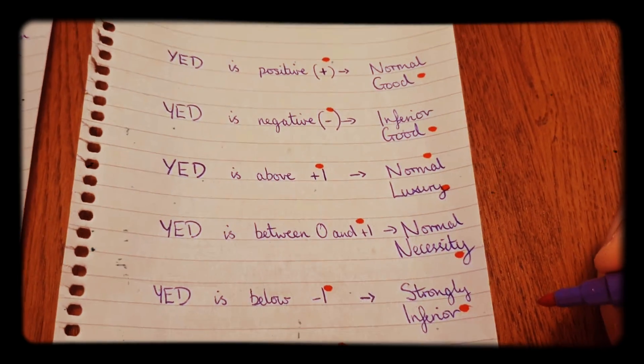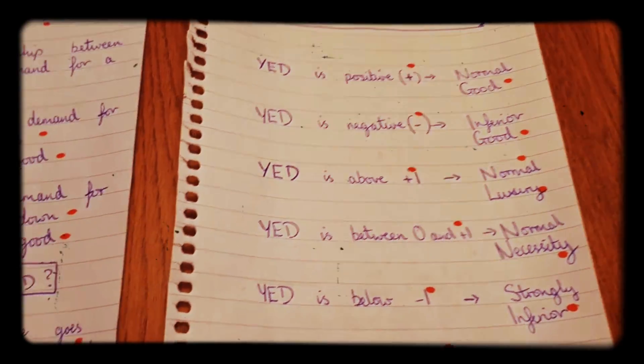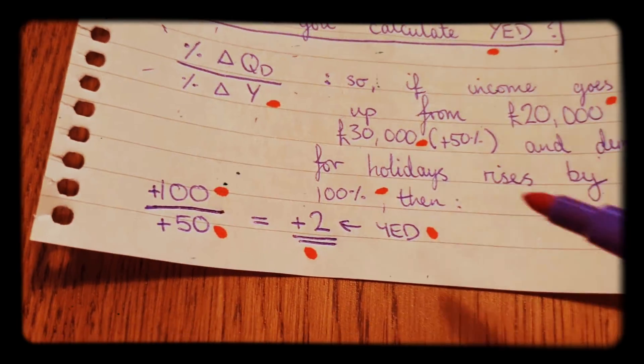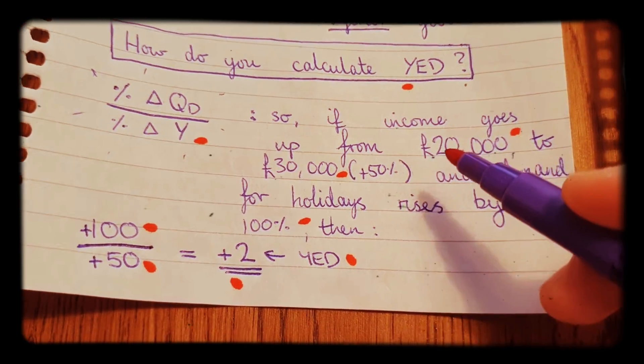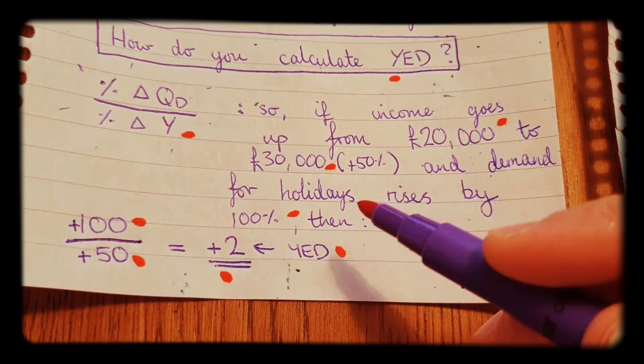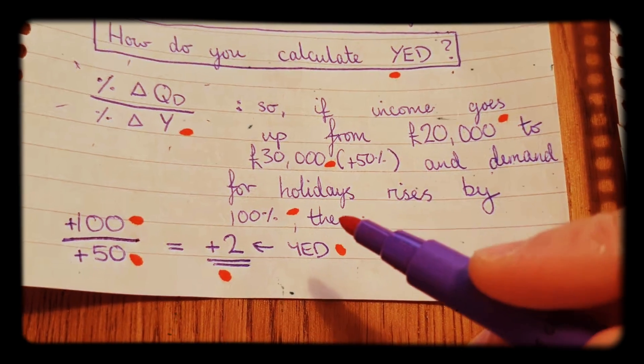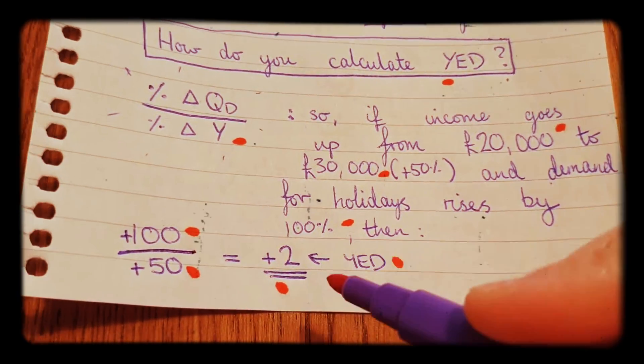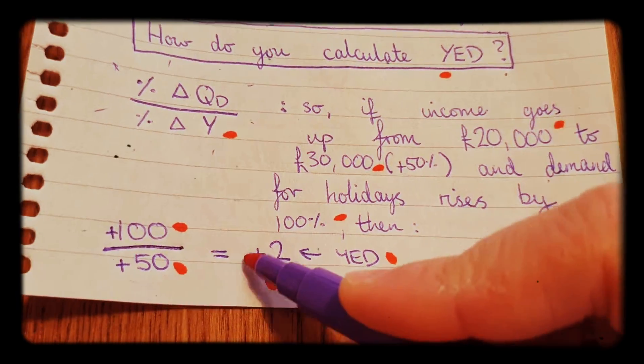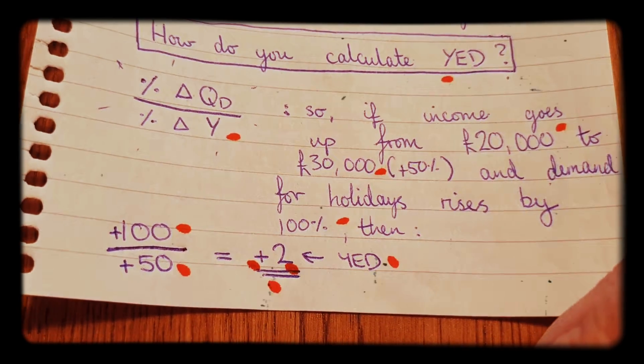So now we've done that, let's go back to our YED from earlier for the holidays. So income went up by 50 percent and demand for holidays went up by 100 percent. We got YED equals positive 2. So what would this be?